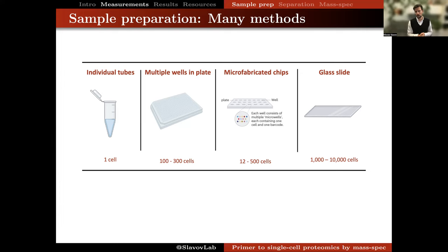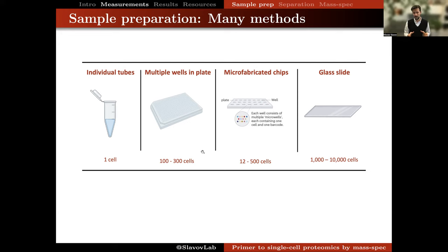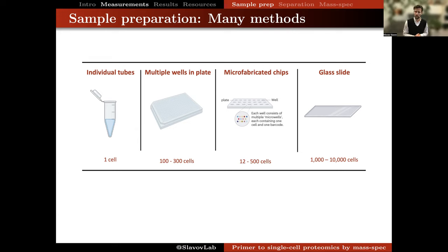The first stage is sample preparation. There are different categories of methods that we and others have developed, ranging from preparing each cell into an individual tube or a miniaturized container such as an autosampler vial or a microcentrifuge tube. Another option is using multi-well plates, which are quite accessible. As long as you have access to a FACS sorter and liquid handler—and even the liquid handler is optional—you can use those approaches.